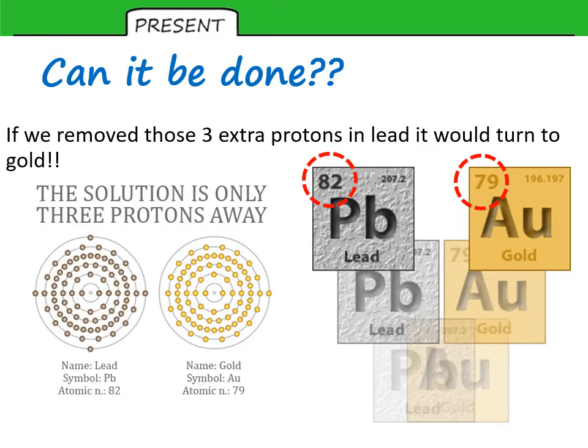We mentioned a few minutes ago about the idea of turning lead into gold. Can it be done? Well, technically, if you could get rid of those extra three protons, then lead would become gold. Can we do it? Perhaps. It might be very radioactive. That's another story.